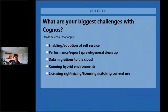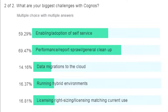The next poll: what are your biggest challenges running into with Cognos? This is multiple choice — select all that apply. Is it enabling or adoption of self-service? Is it performance, report sprawl, or general cleanup? Those Cognos environments — packages, reports, everything — can get really big and cluttered. Is it moving from on-prem to cloud or hybrid environment? Or licensing and right-sizing? Closing it out: adoption of self-service and performance and general cleanup are the top results, which is not too surprising.